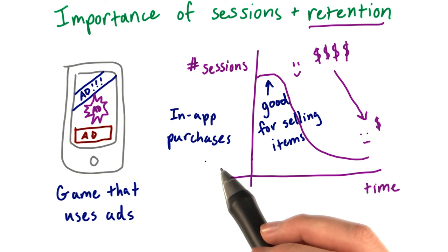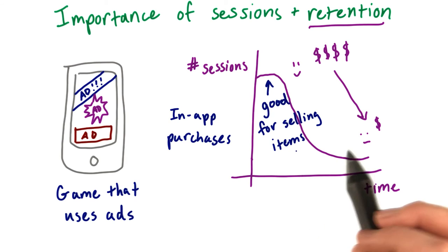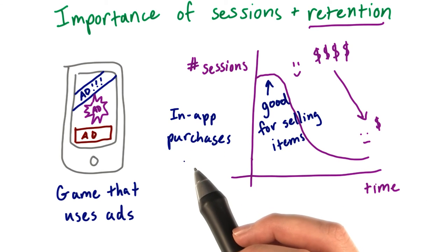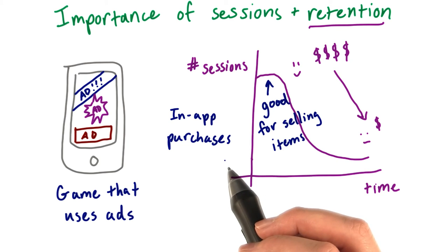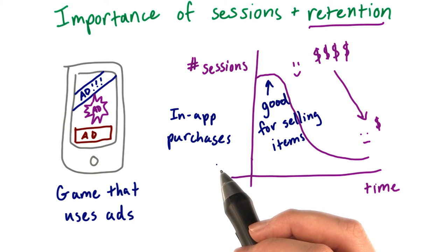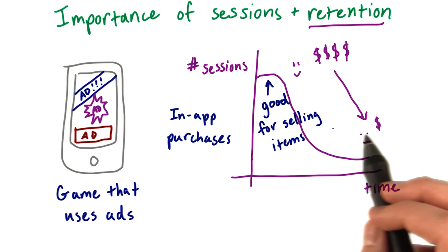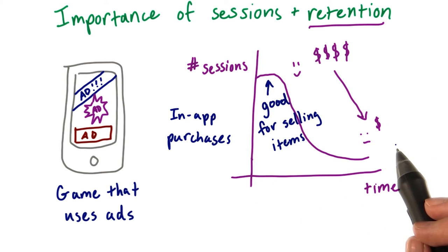Retention is especially important if your game is planning on selling items in the game over time. These items are called in-app purchases and include things like power-ups or special game equipment that players can buy and then use in the game. And you want these sales to be pretty consistent over time so that you continue to make money.